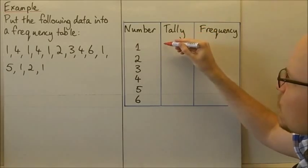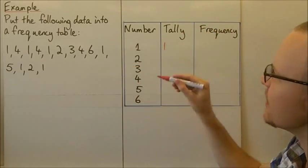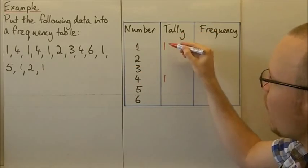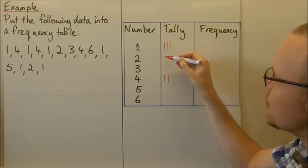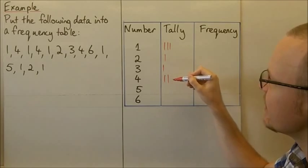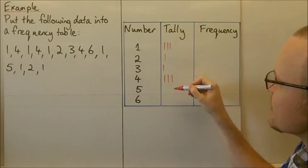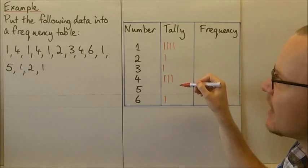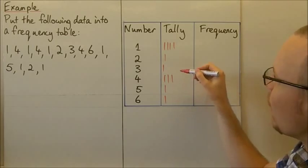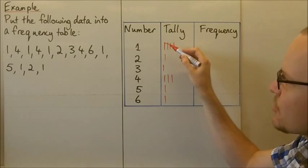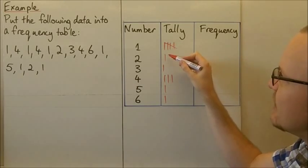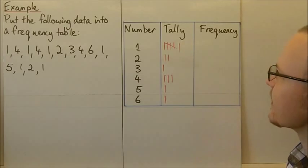We have a look. The first one's a one, so we put a dash there. Then there's a four, a one, a four, a one, a two, a three, a four, a six, one, a five, one. And now we've gotten to five ones, so I can put a dash through it, two, and one again.